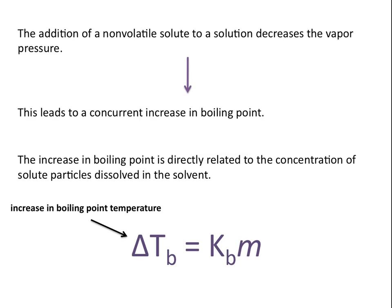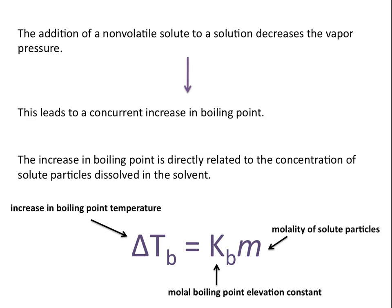Delta T sub B is the increase in boiling point temperature. M is the molality of solute particles, and K sub B is the molal boiling point elevation constant, which is dependent on the solvent that you have.